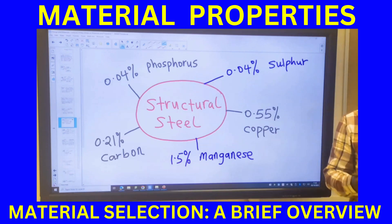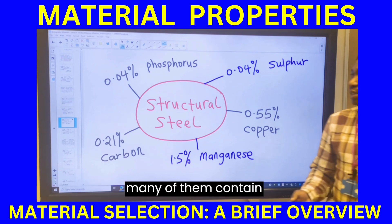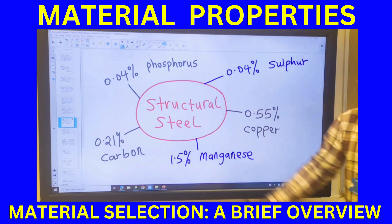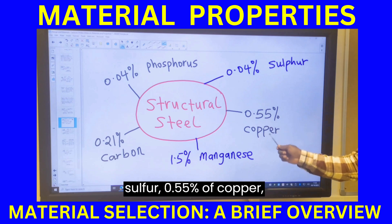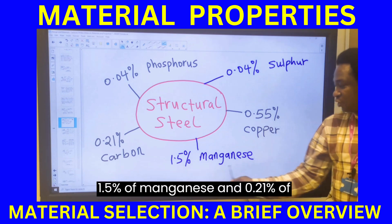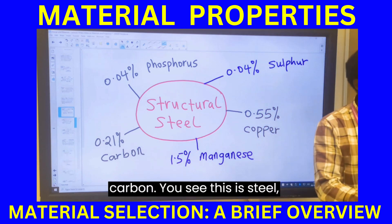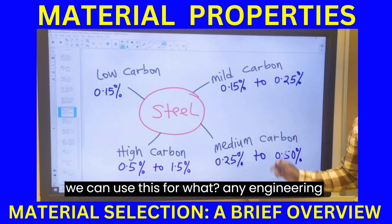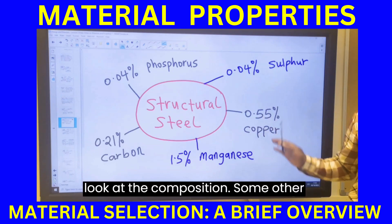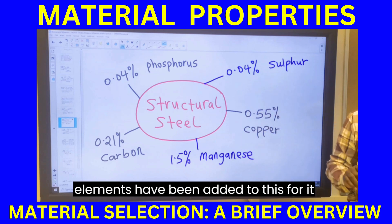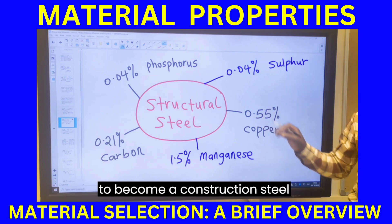Structural steel — the steel used in the construction industry — typically contains up to 0.04% phosphorus, 0.04% sulfur, 0.55% copper, 1.5% manganese, and 0.21% carbon. Various other elements have been added to make it a construction-grade steel material.